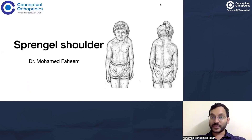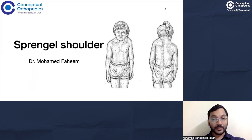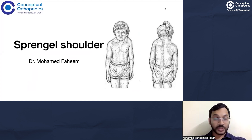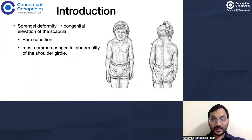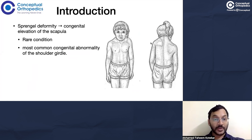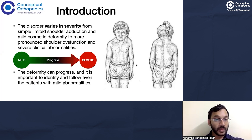Today we will be talking about Sprengel's shoulder, which is an important condition from the exam point of view. It's a rare condition, but it does pose a significant clinical problem in the pediatric population. Sprengel's shoulder is basically a congenital elevation of the scapula, and it happens to be the most common congenital abnormality of the shoulder girdle.